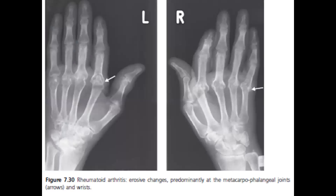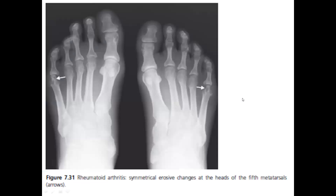Looking at the diagram of rheumatoid arthritis erosive changes, you can see erosions here and here. This also shows symmetrical erosive changes at the heads of the fifth metatarsals — notice the bone erosion here, and remember that rheumatoid arthritis is mostly symmetrical.